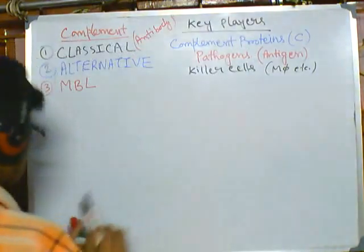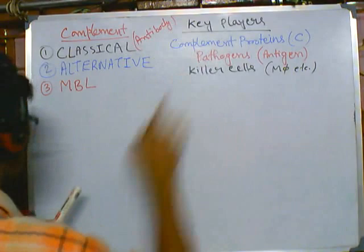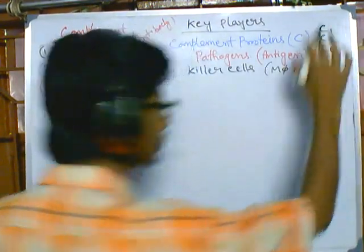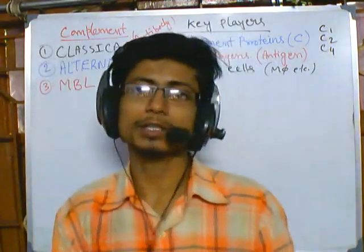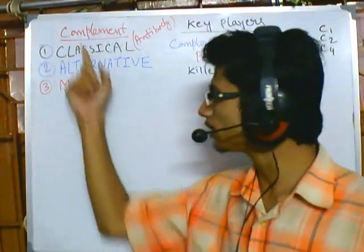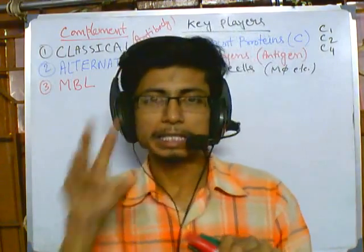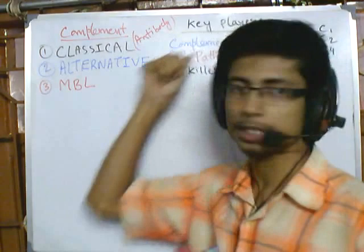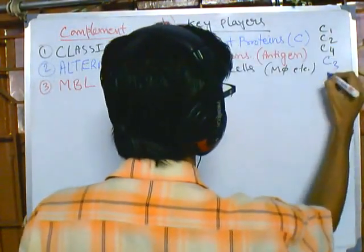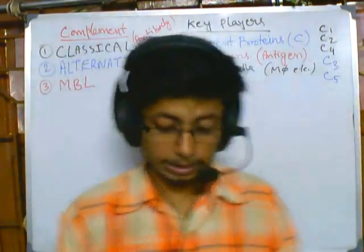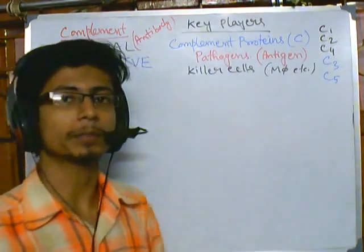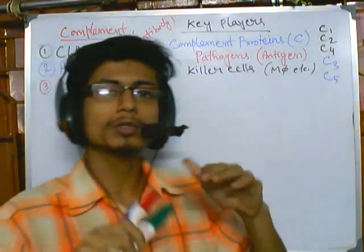When we do have access to antibodies, most of the complement pathway is activated by the classical system. For the classical pathway, the complement proteins involved are C1, C2, and C4. Now, in any kind of complement pathway, there are major key complement proteins common to all. These major key complements are C3 and C5 — the most important complement proteins across all pathways.